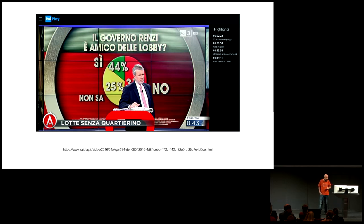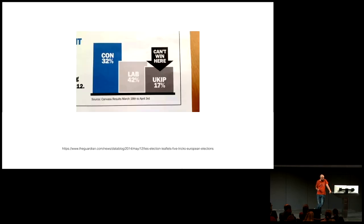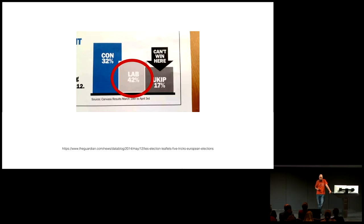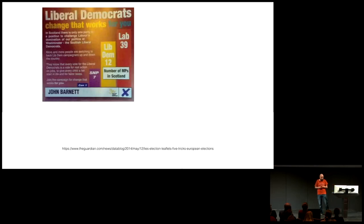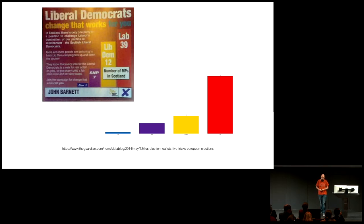From a few elections ago in the UK, a few leaflets from a variety of parties. From the Conservatives — they're telling a story about how you shouldn't vote for the others. According to their graphic designer, 42% is much smaller than 32%. The next one is from the Lib Dems — one of those 'go out and vote because we are close second and we need your vote to catch up' messages. But when you look at the real chart, well, they are second, but not very close.